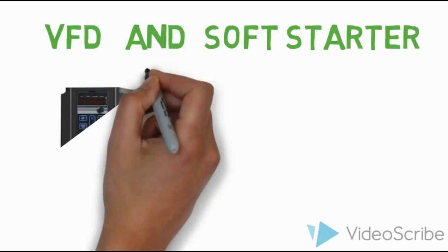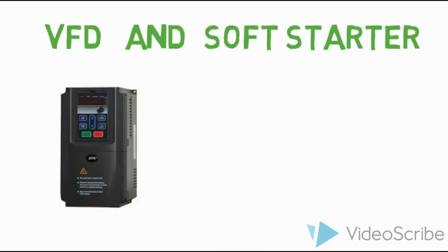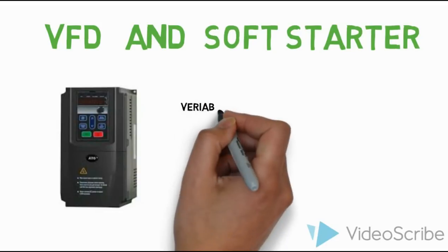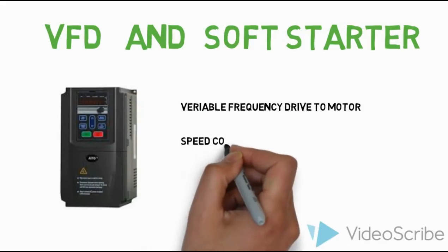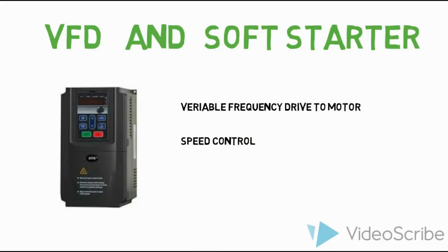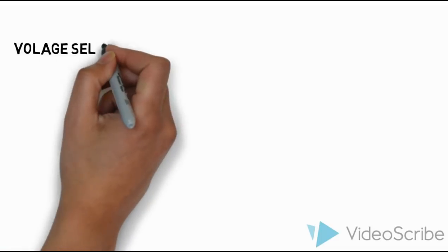Next are VFD and Soft Starter. VFD is Variable Frequency Drive, used mostly for speed control — specifically induction motor speed control. The Soft Starter is similar to VFD. In the initial state, current control is done by the Soft Starter. When starting a motor, we use a Soft Starter for current limiting, while VFD is used for speed control.